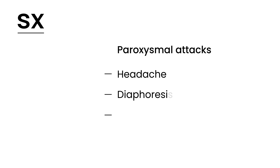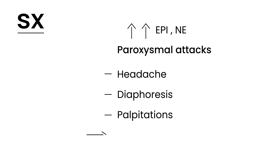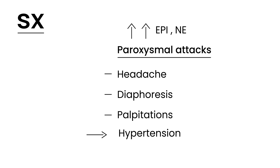The second symptom is tremendous sweating, diaphoresis. The third is palpitations. There are a lot of other symptoms that can occur with elevated levels of catecholamines such as epinephrine and norepinephrine, but one that is very characteristic is very high blood pressure — hypertension. What distinguishes this from any other case of high blood pressure is that the high blood pressure comes and goes.